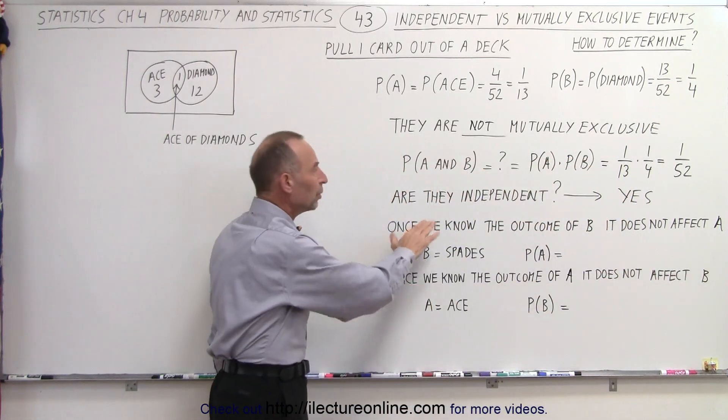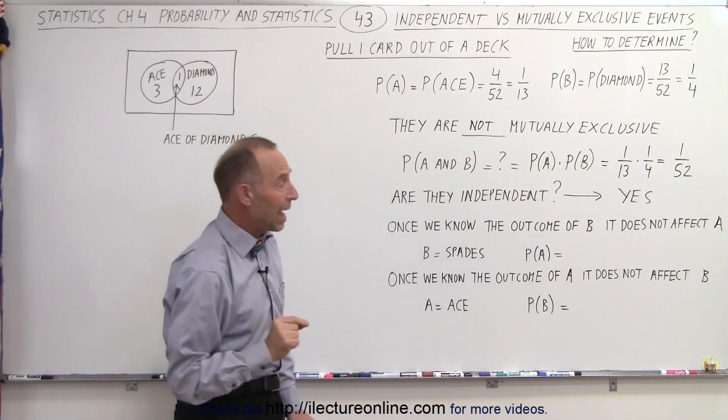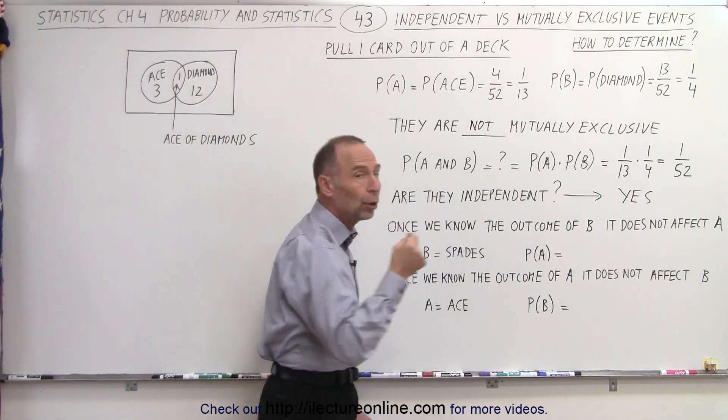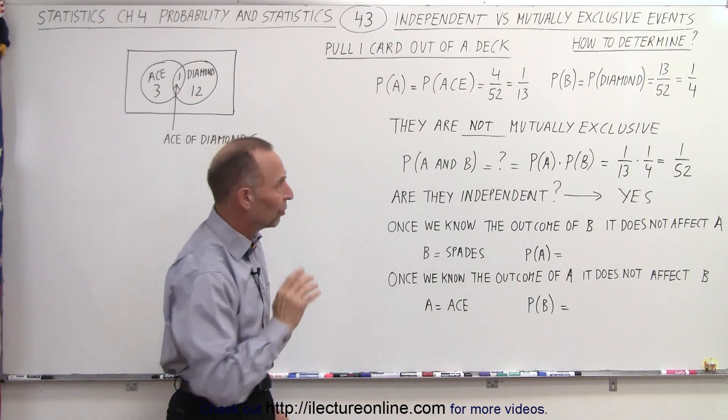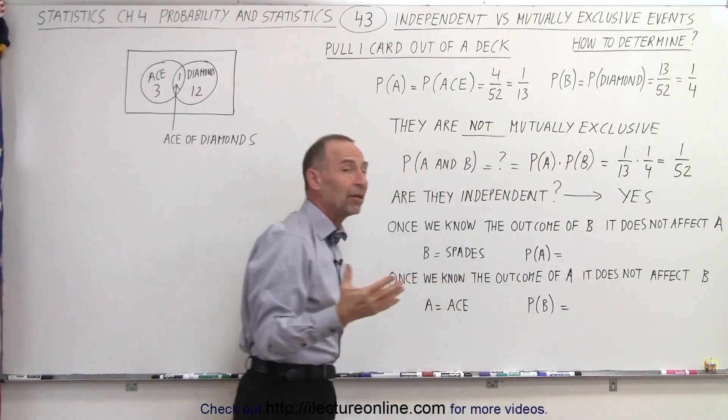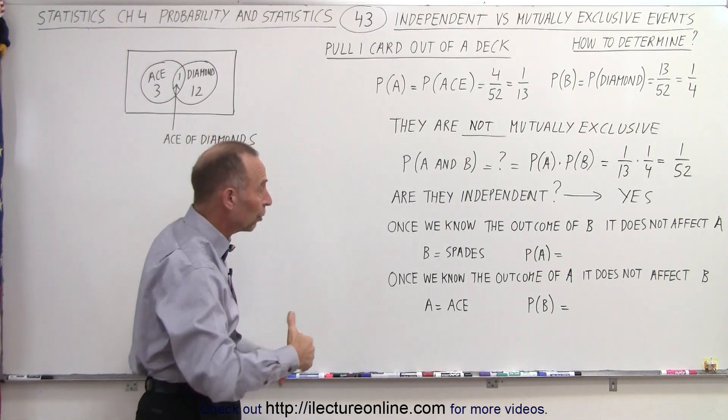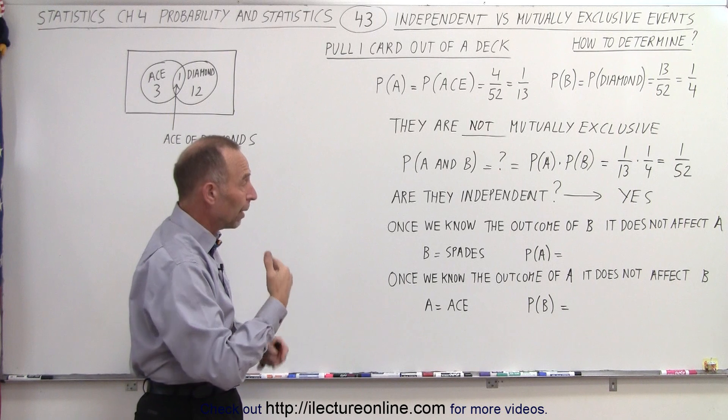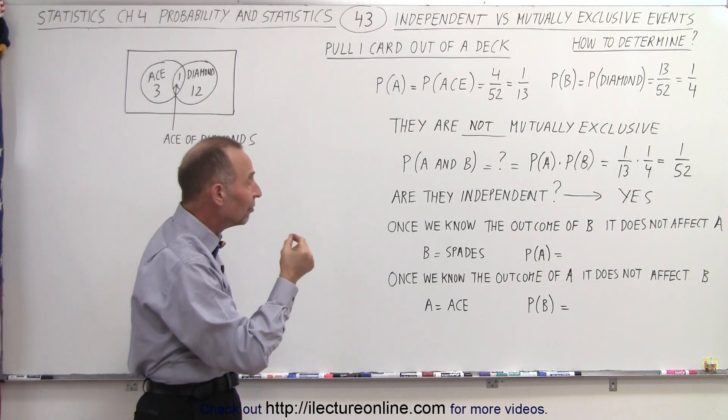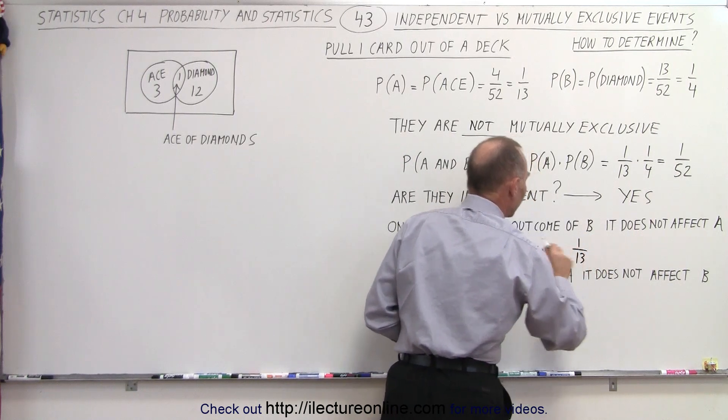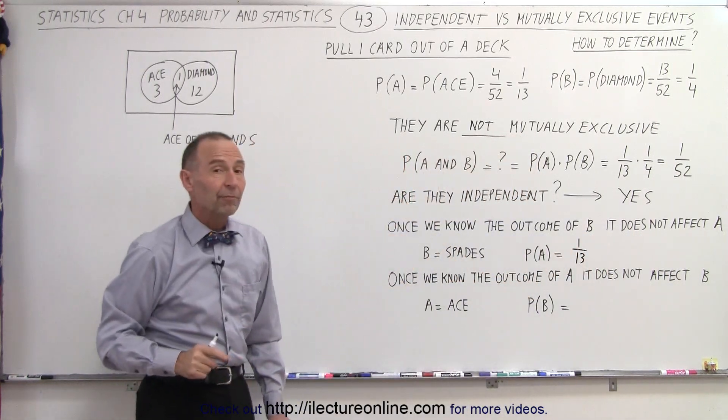Now, once we know the outcome of B, does it affect A? Well, let's say we pull out a card and we know that it's spades. But we don't say anything else. We simply satisfy that we did not get a diamond, but we got spades. Does that affect the chance or the probability of drawing an ace? And the answer is no, not at all. The probability of that being an ace is still 1 out of 13. So it has no effect on the probability of A once we know the outcome of B.